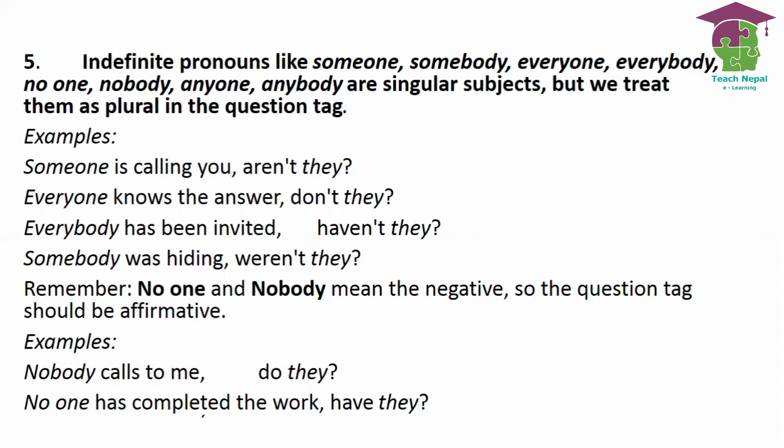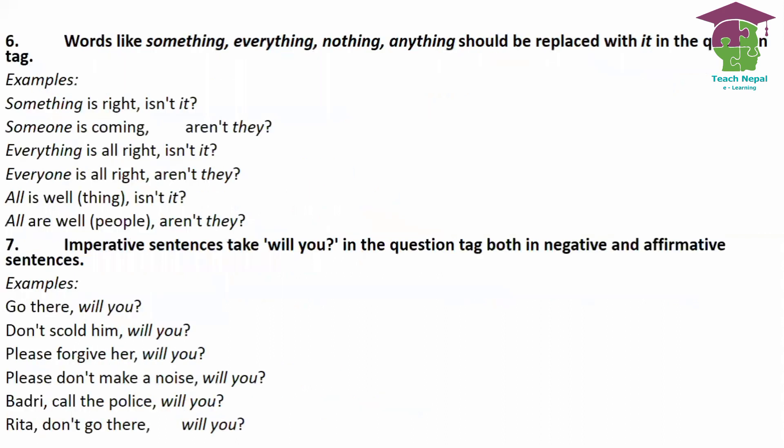For example: 'Nobody calls to me today' — the statement is already negative, so the tag is affirmative: 'do they?' Likewise, 'No one has completed the work, have they?' Words like 'something', 'everything', 'nothing', 'anything' should be replaced with 'it' in the tag. For example: 'Something is right, isn't it?' Also, 'All are well, aren't they?'